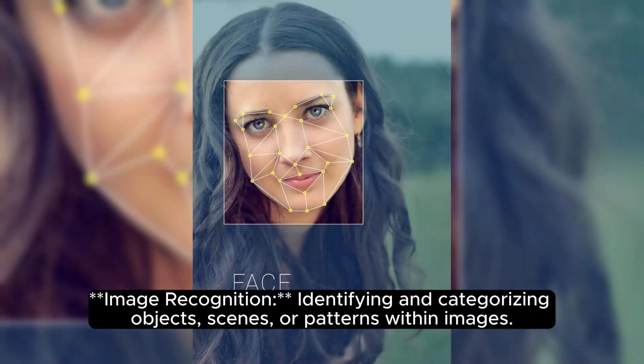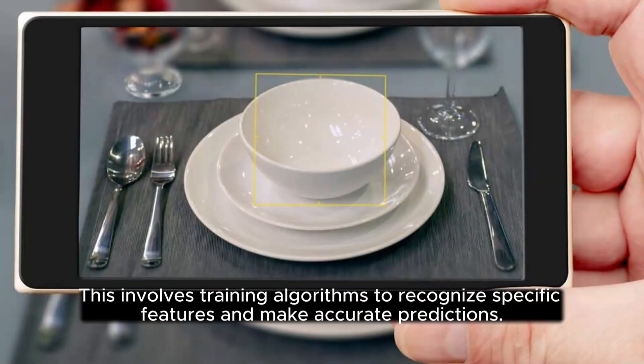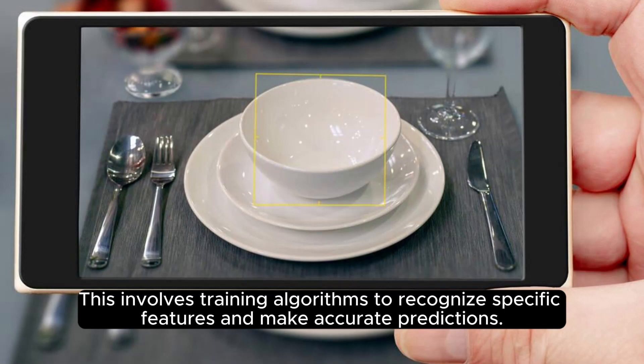Image recognition: identifying and categorizing objects, scenes, or patterns within images. This involves training algorithms to recognize specific features and make accurate predictions.